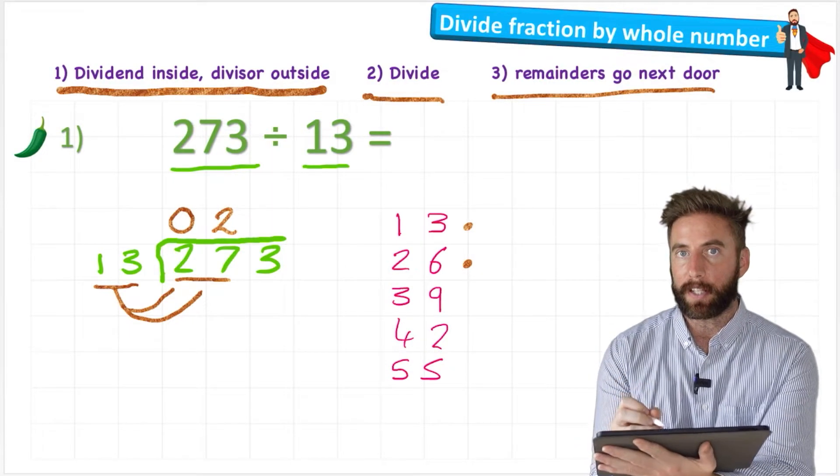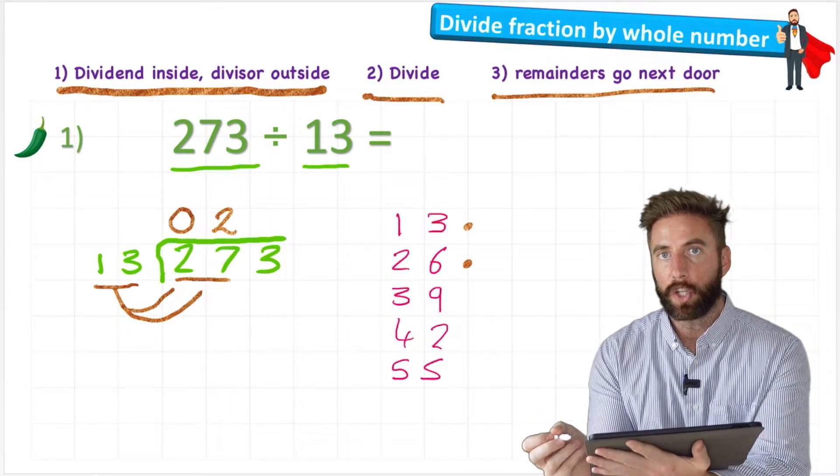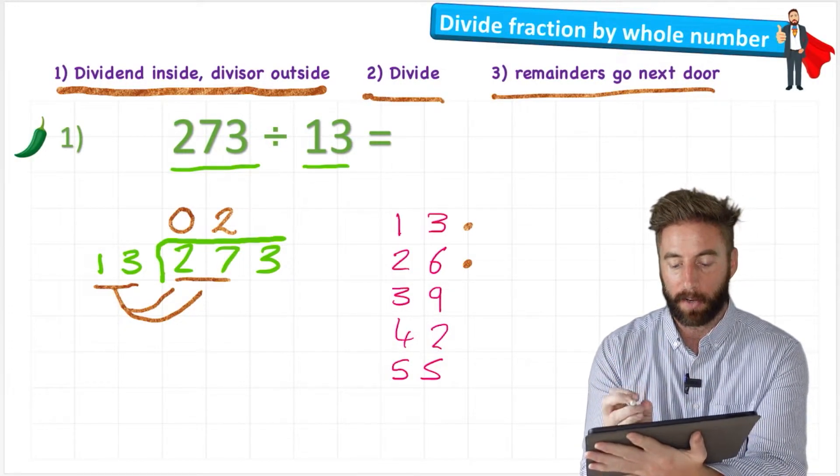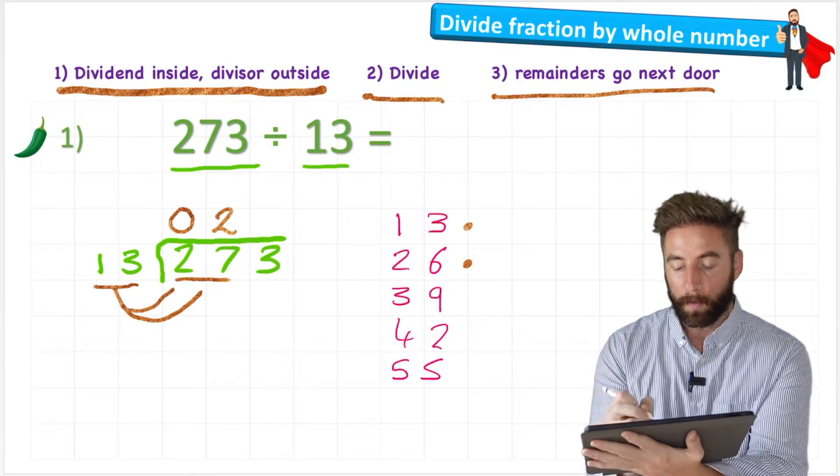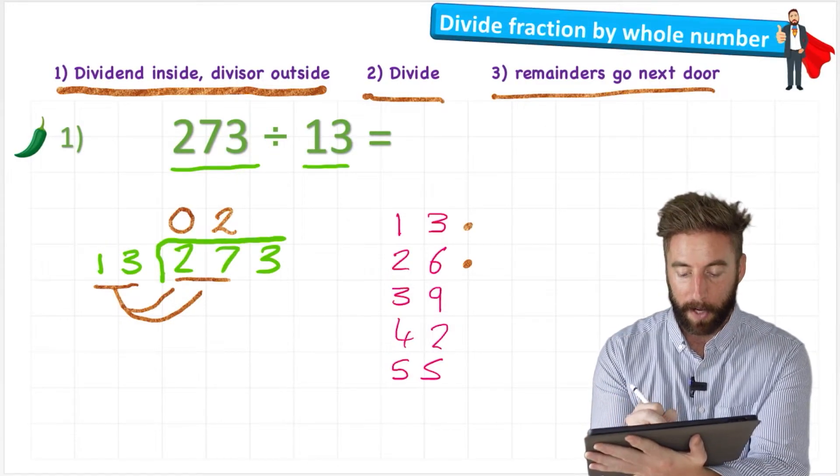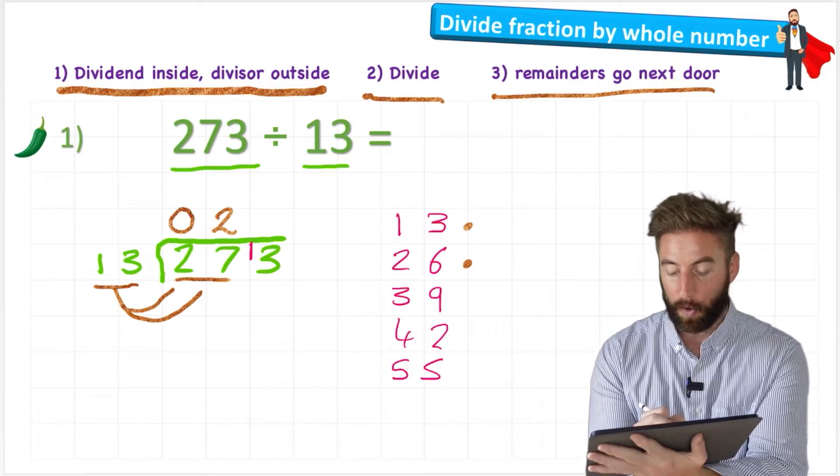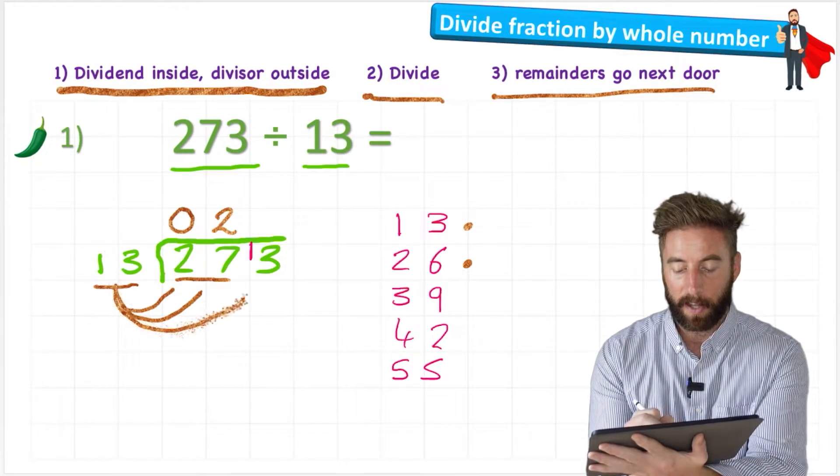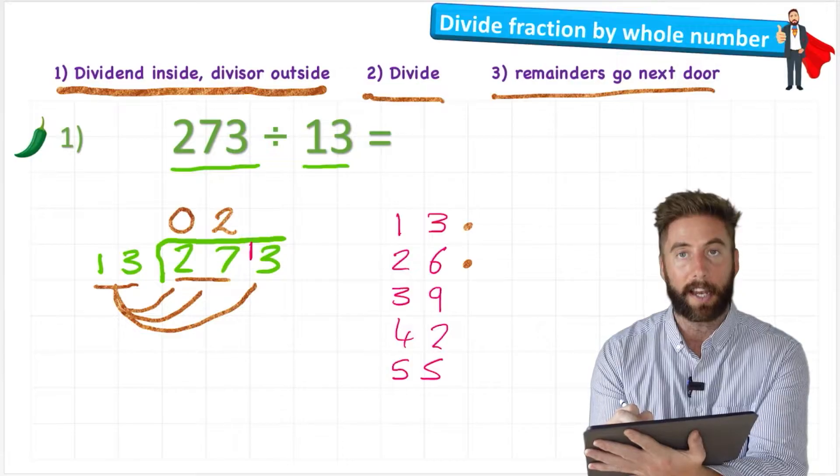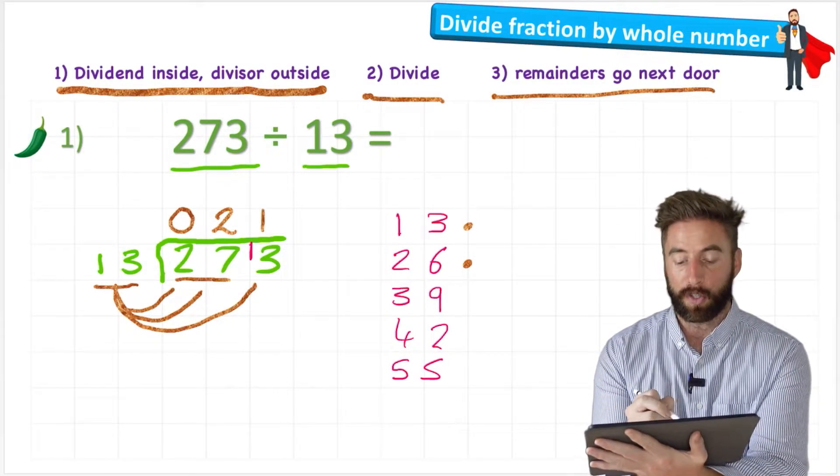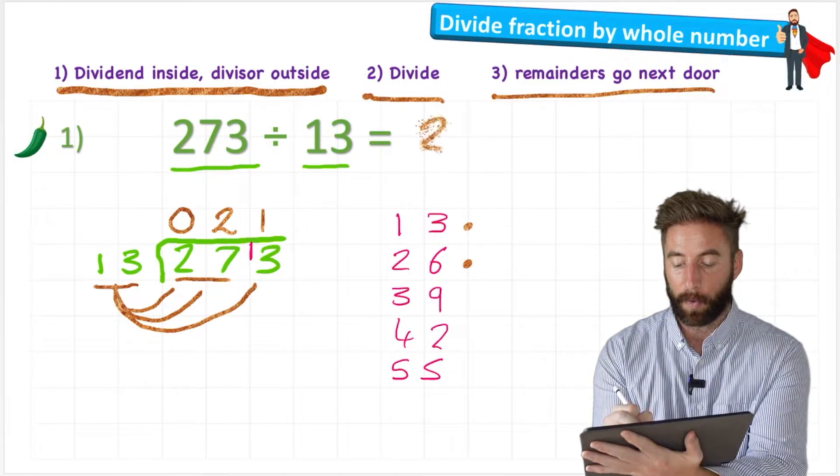But we only managed to get to 26 and we needed to get to 27, so we have 1 left over. The difference between 26 and 27 is 1. So what am I going to do with that 1? I'm going to follow step 3 and put it next door. So now my 3 becomes a 13. And now I can do how many 13s are there in 13? Well again, looking at our multiplication chart, you can see it's just 1. So my answer to 273 divided by 13 is 21.